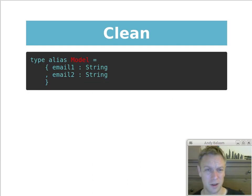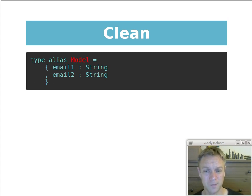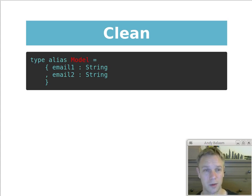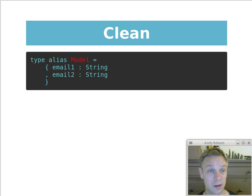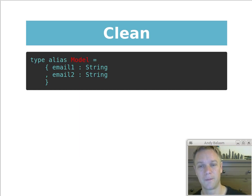Here's an example model — this is the model for the email program we were just looking at. It's really simple: it's just got two values in it — email one and email two. Notice it hasn't got anything about whether the submit button is enabled. You can tell whether the submit button should be enabled based on the two email addresses, so you don't represent that in the model — and that's why you can't get it wrong.